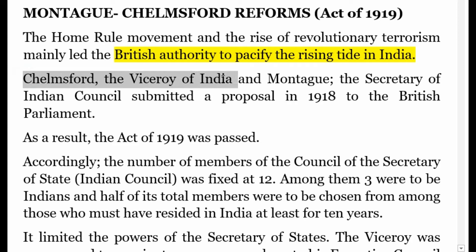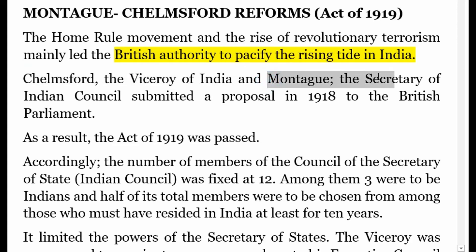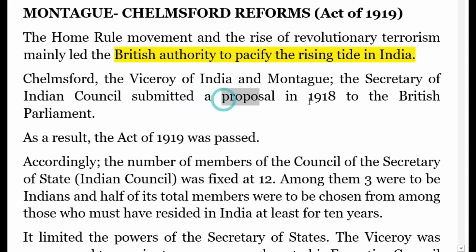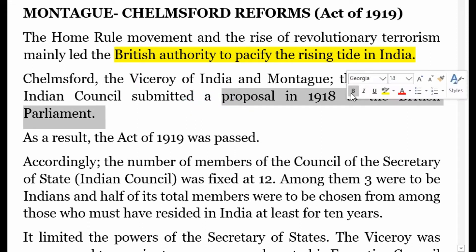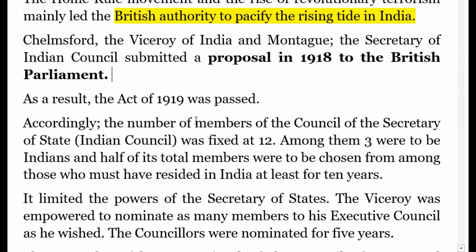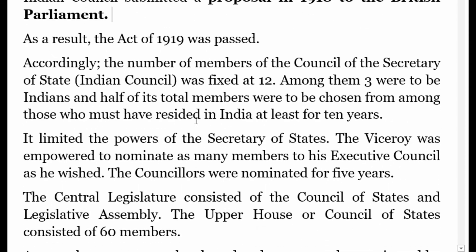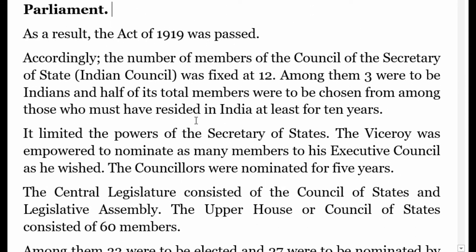Chelmsford was the Viceroy of India and Montague was the Secretary of the Indian Council. They submitted a proposal in 1918 to the British Parliament. As a result, the Act of 1919 was passed, and this is called the Montague Chelmsford Reform.